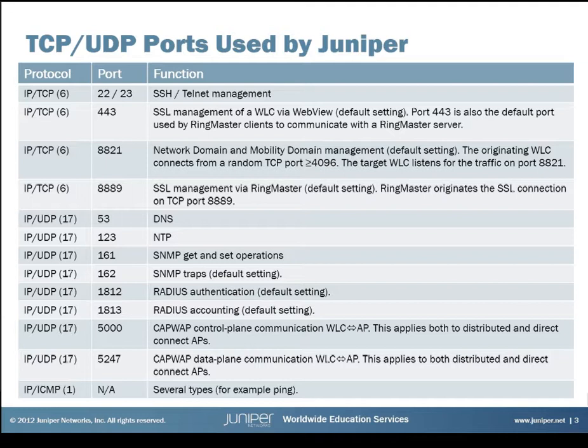In this list you see TCP and UDP ports used by the Juniper WLAN solution. It includes some commonly used TCP and UDP ports but also some proprietary ones. As this learning byte is about the show TCP command we will focus on the TCP ports here. We see 22 and 23, which are the common ports for SSH and Telnet. We see 443, which is used by the web-based interface of the wireless LAN controller called WebView. And then we see two proprietary ports.